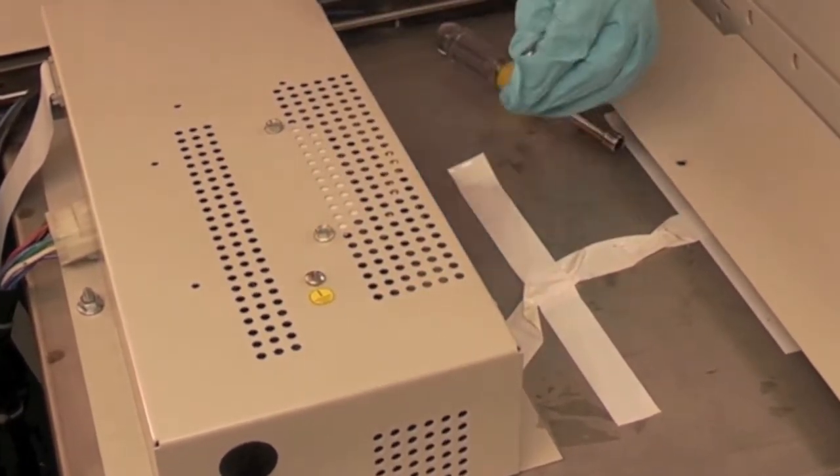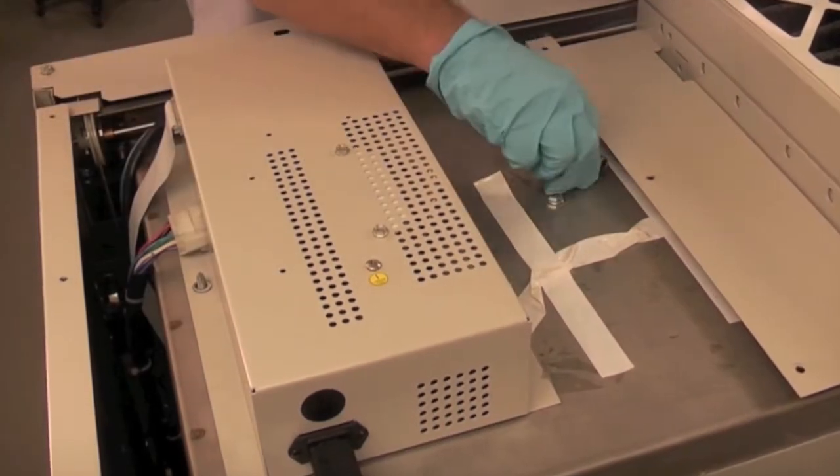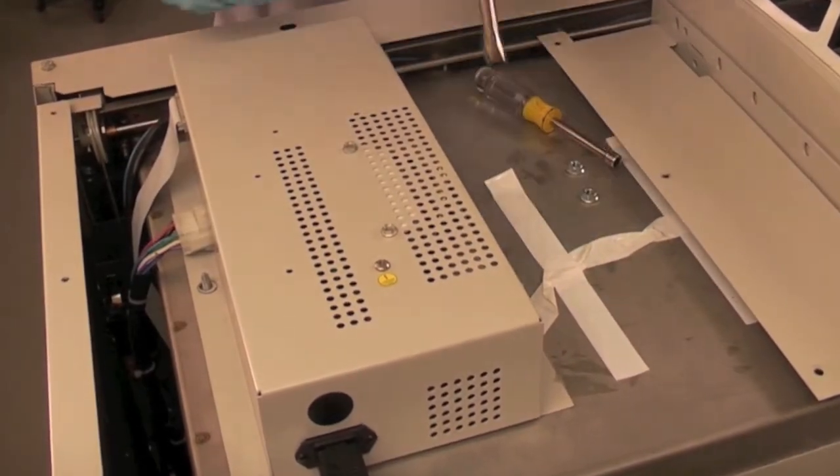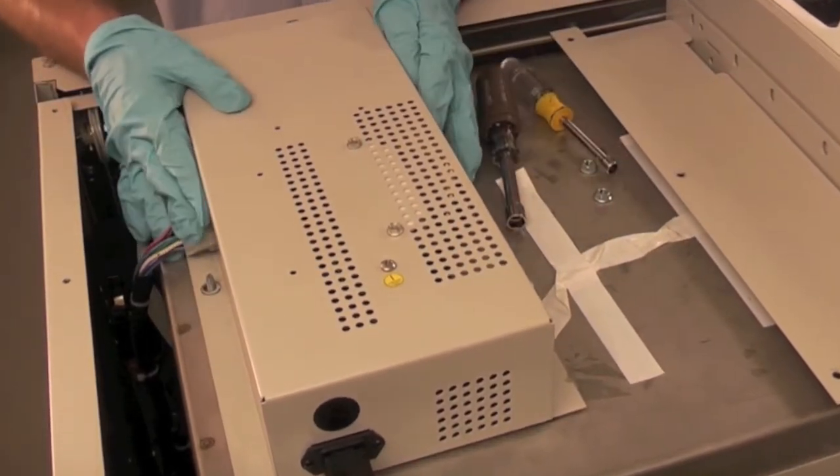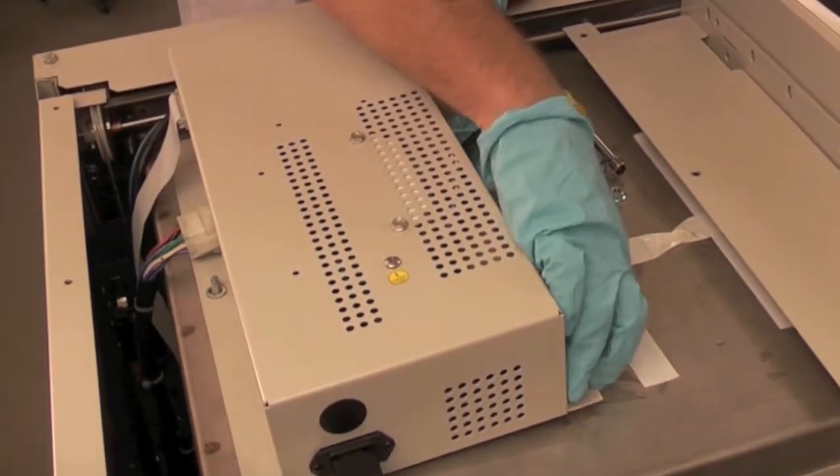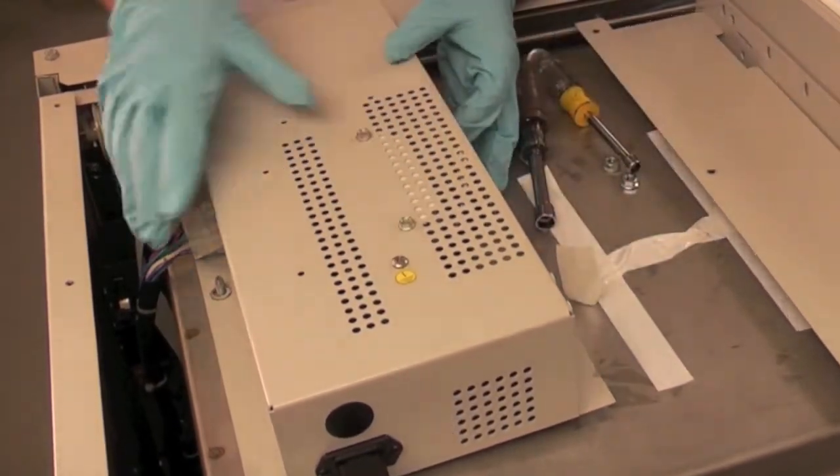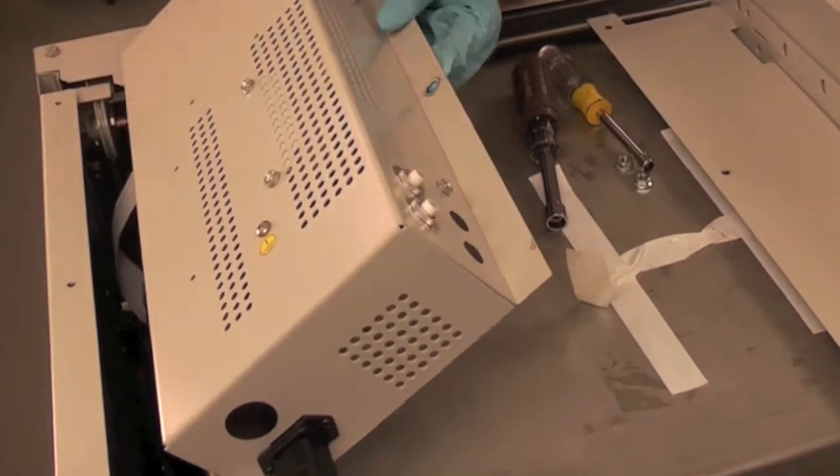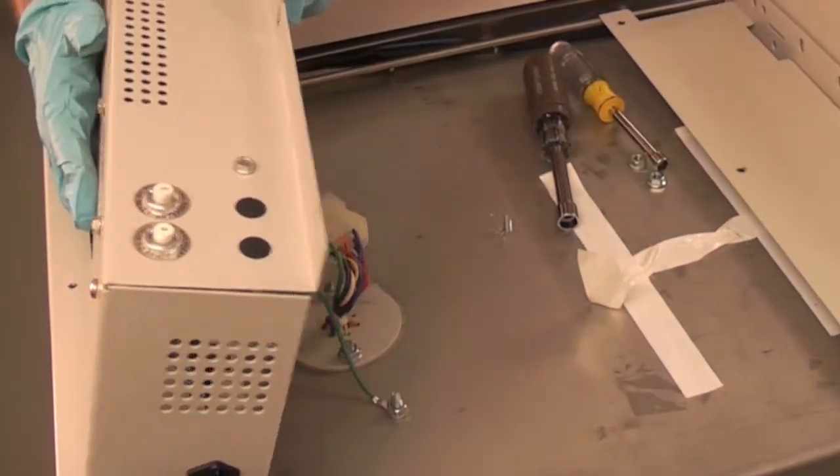Tilt the electronics module on its side to access the underside of the module. Secure the module so that it does not fall and damage the wiring. Locate the fluorescent lamp ballast in the module.